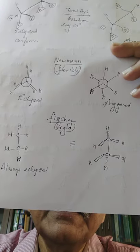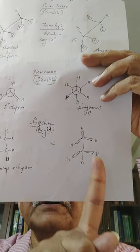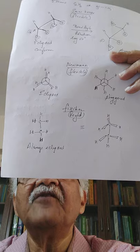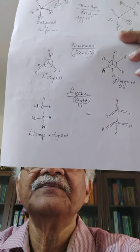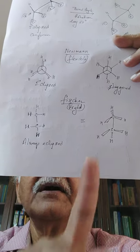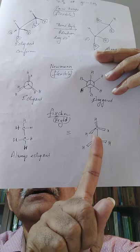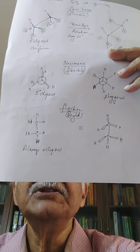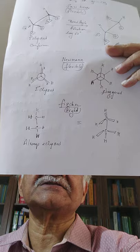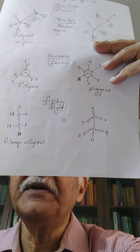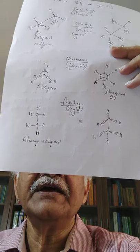The Fischer projection corresponds exactly to the perspective formula. The topmost and bottom hydrogens are indicated with dotted lines — they are away from the viewer. The hydrogens to the left and right are indicated with wedge-shaped lines — they are towards the viewer. So there are four hydrogens projecting towards the viewer and two hydrogens (top and bottom) away from the viewer. Whenever you encounter this notation, you must recognize how the groups are oriented.